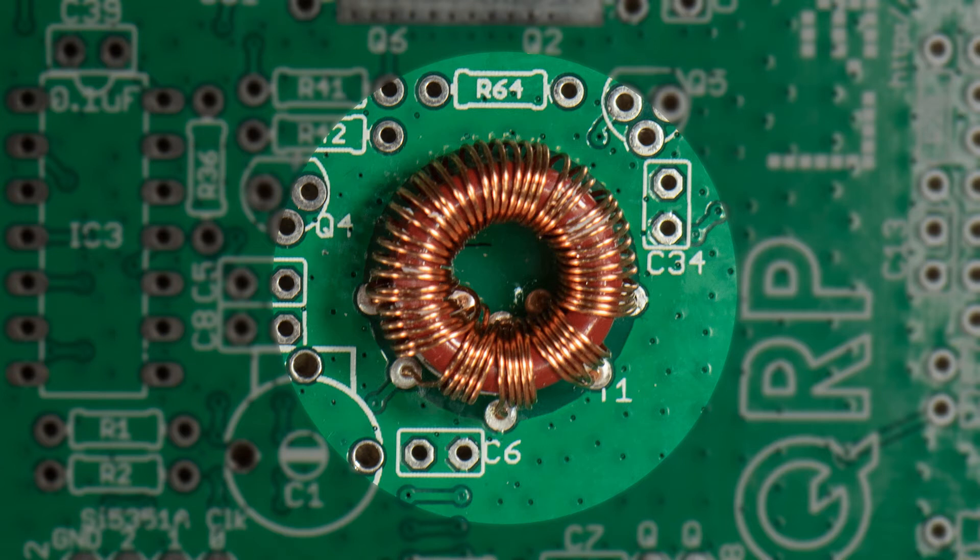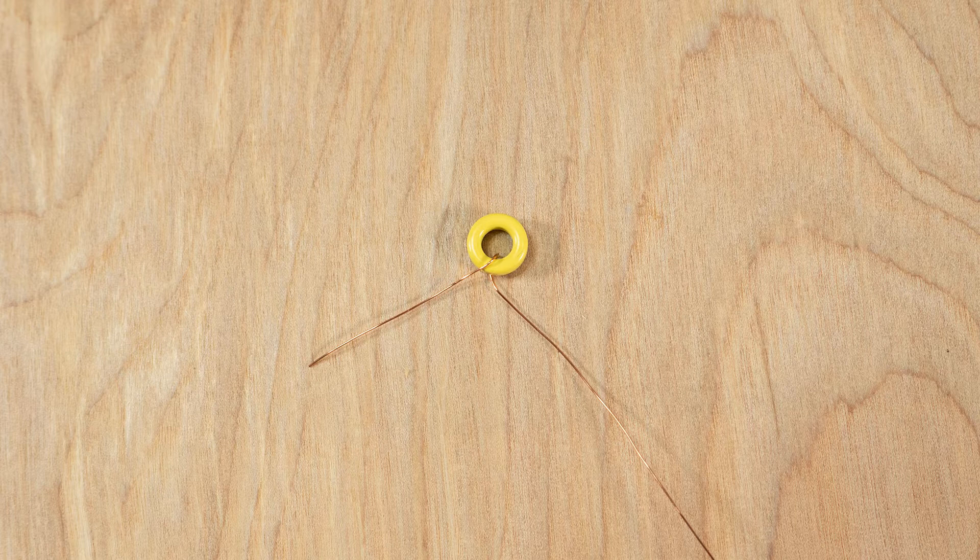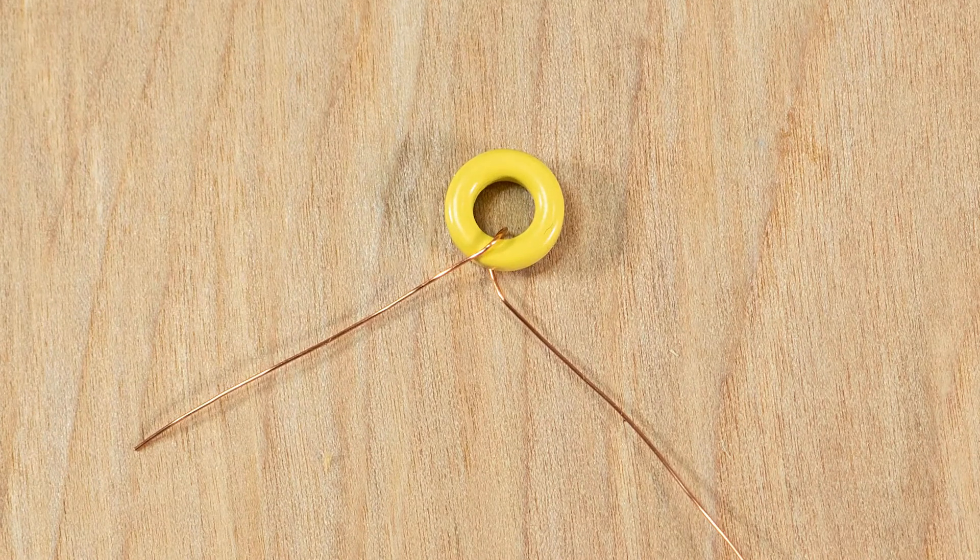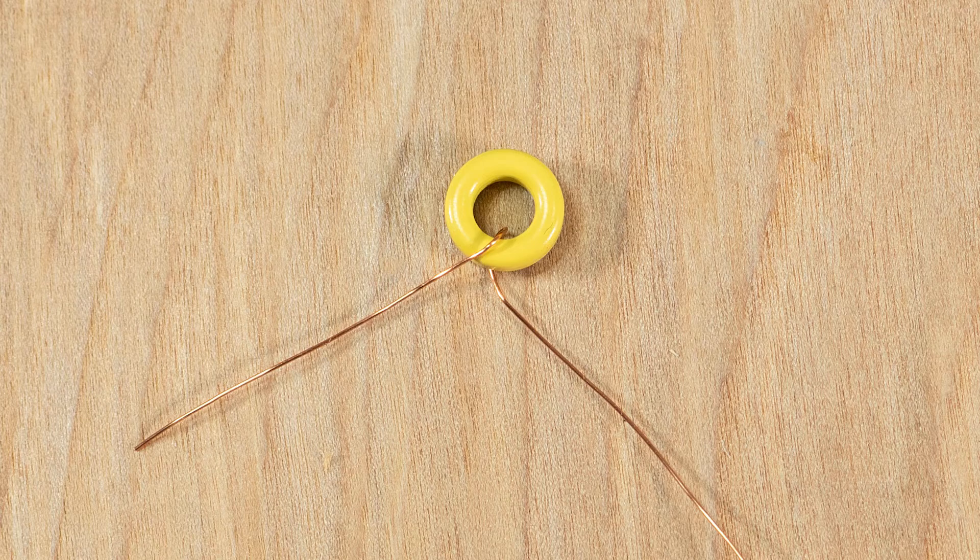The starting point is also important as some leads are finishing outside the toroid and some inside, and they need to be correctly oriented to fit on the PCB. To get this to happen it's necessary to start on the left with the wire going over and down into the center of the toroid.